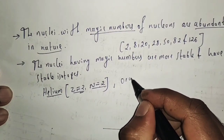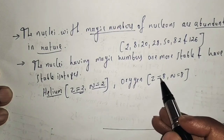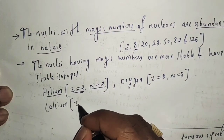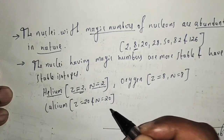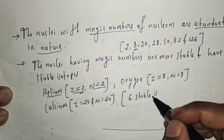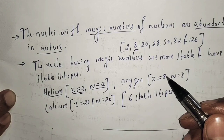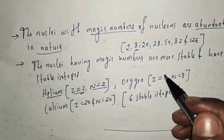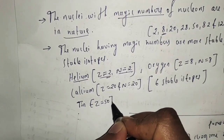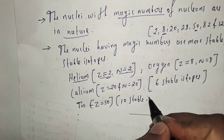Calcium has 20 protons and 20 neutrons, both of which are magic numbers, making it doubly magic. Calcium also has six stable isotopes. Isotopes are atoms of the same element that have different numbers of neutrons but the same number of protons. Tin has 50 protons — which is the magic number 50 — and tin has 10 stable isotopes.